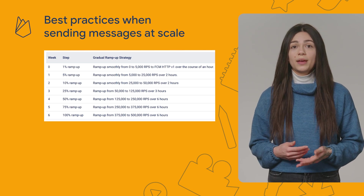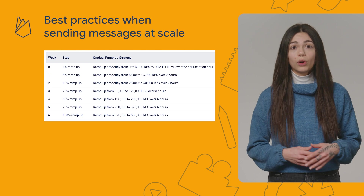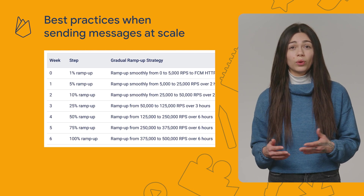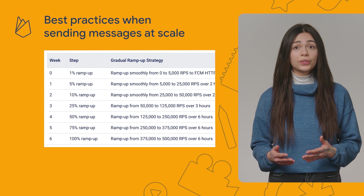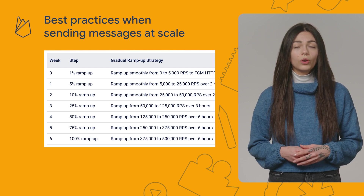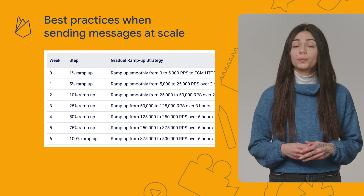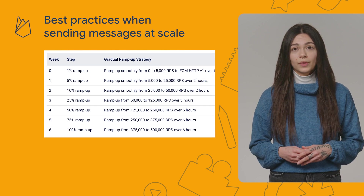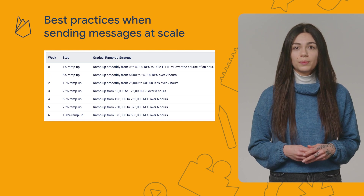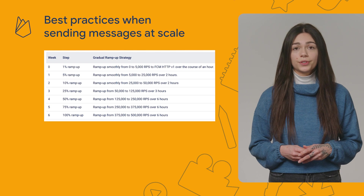Or migrating to a different FCM API version, you should create rollout and rollback plans, and make gradual changes instead of rolling the change for 100% of your user base all at once. Rolling out gradually allows you to spot potential problems before the next step up, while your rollback plan allows you to prepare mechanisms to quickly and safely recover from unanticipated failures.